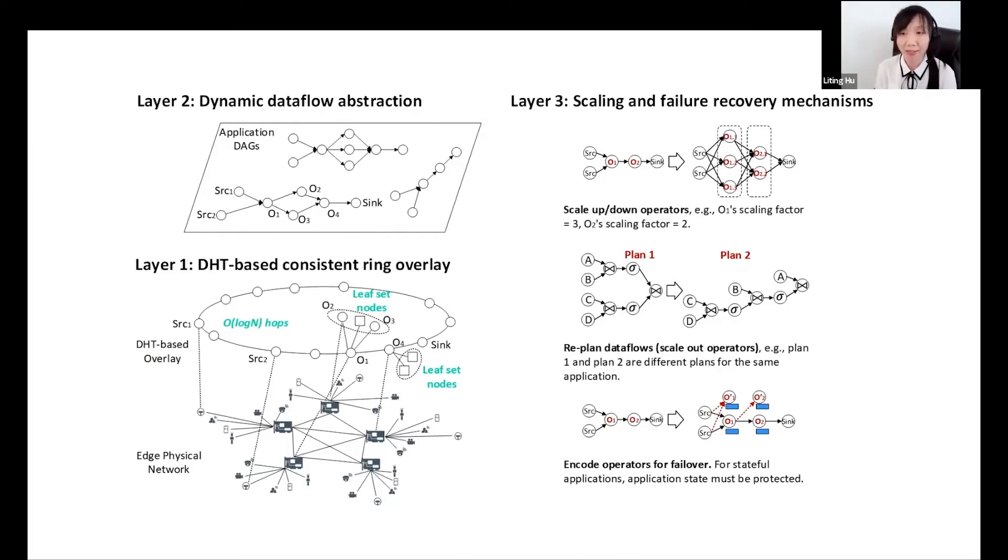It is guaranteed that no matter where the data is generated, the data can be routed to any destination nodes within log(n) hops. The second layer is the dynamic data flow abstraction. The key innovation is that we leverage the DHT-based routing protocol to approximate the paths between the source nodes and the sync nodes, which can automatically place and chain operators to form a data flow graph for any stream application.